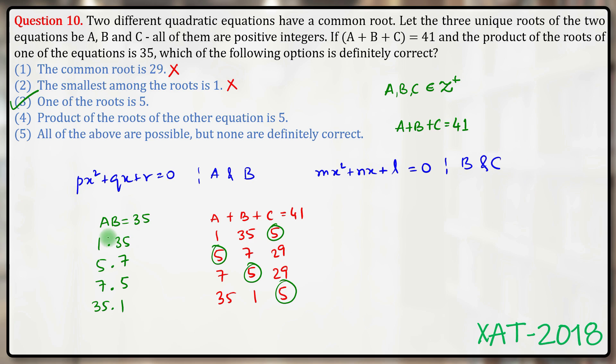If you are not completely convinced, you can also check answer option 4. Product of roots of the other equation is 5. The product of roots of the other equation should be b times c. Which can be 35 times 5 is 175, 29 times 7 is 203, 29 times 5 is 145.